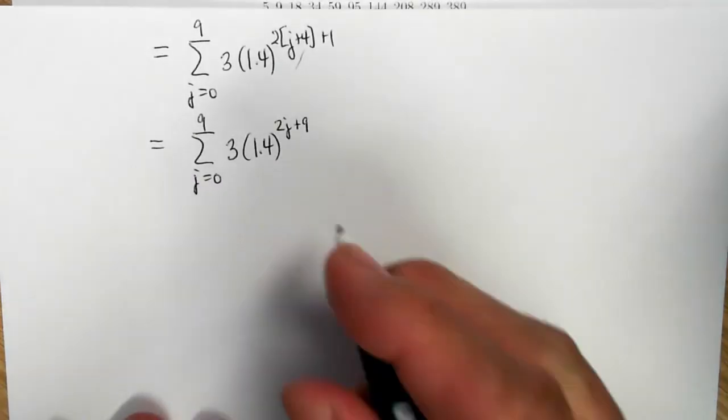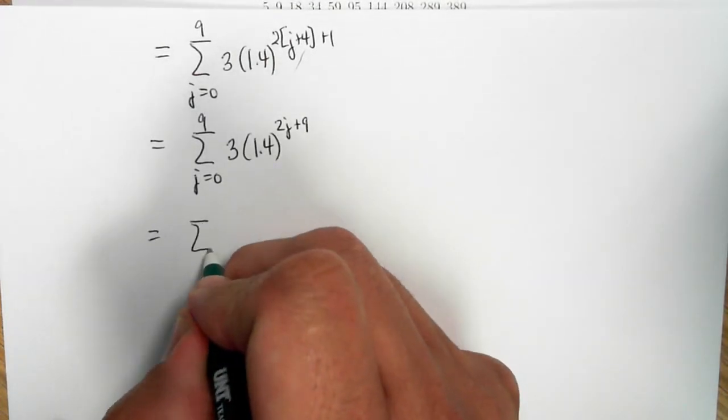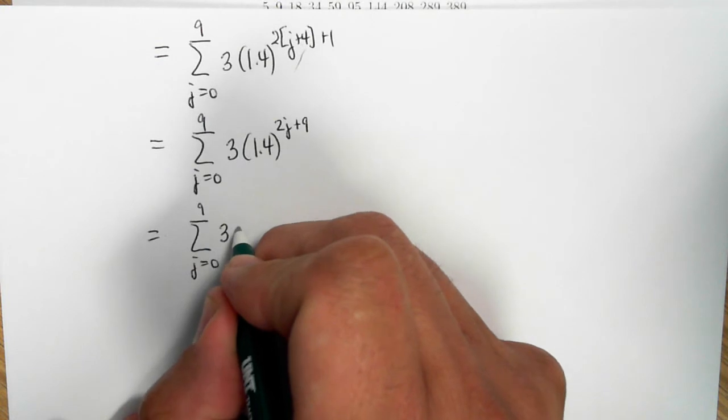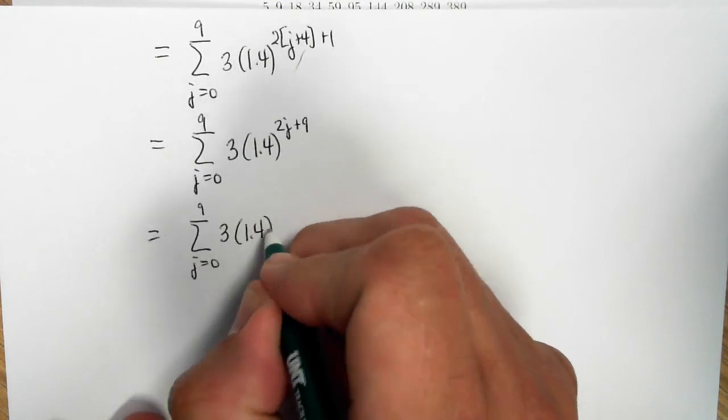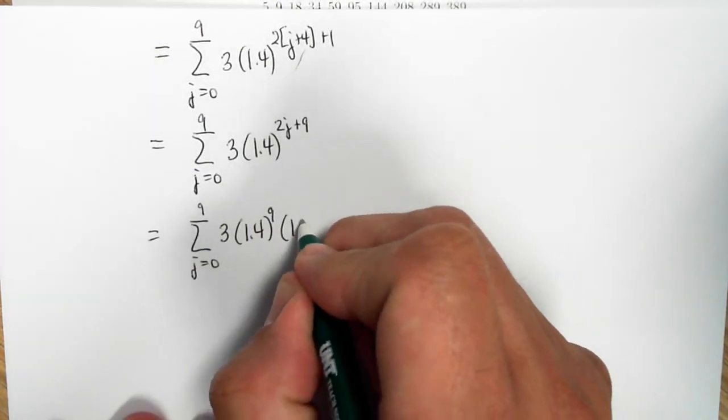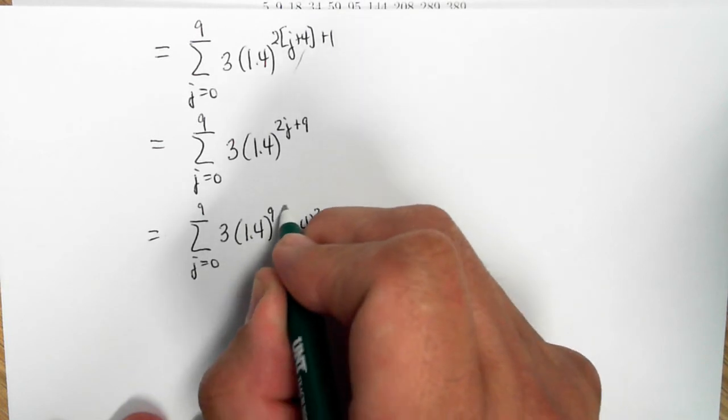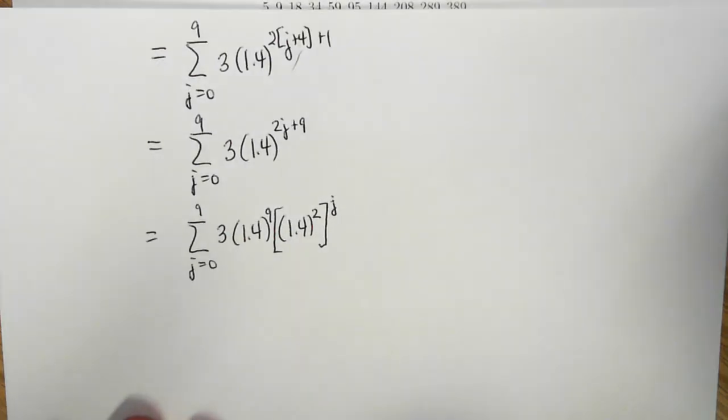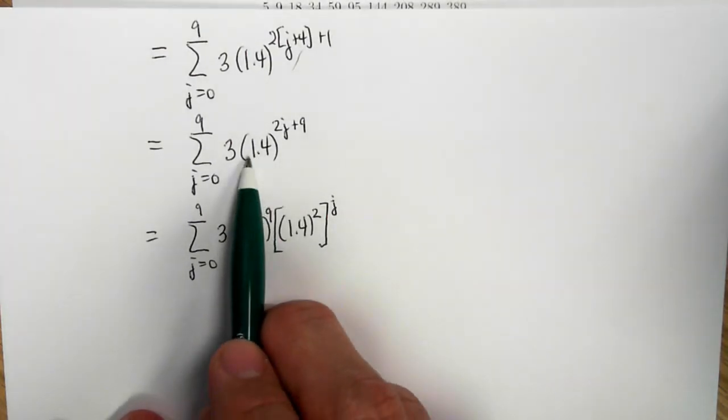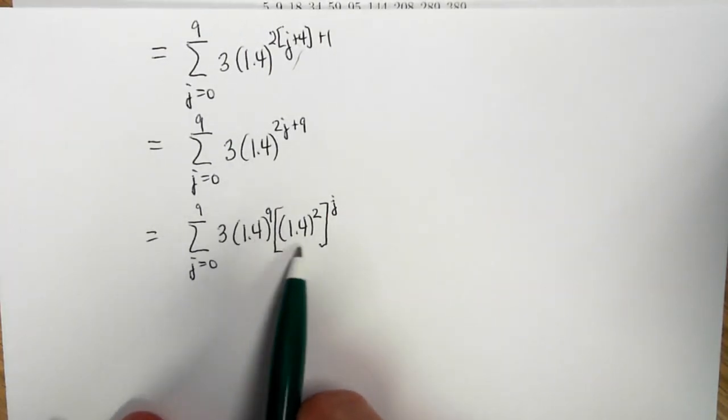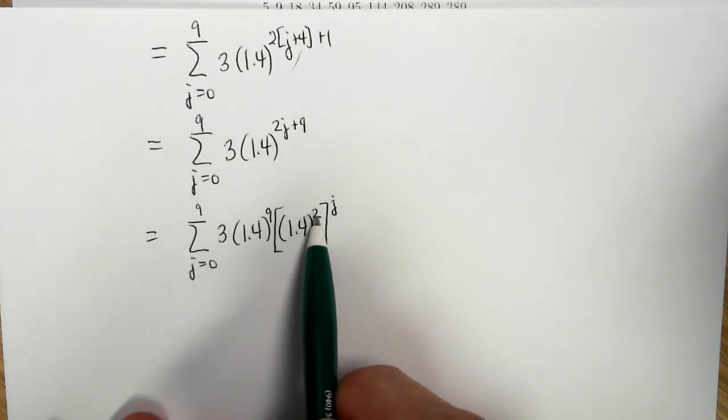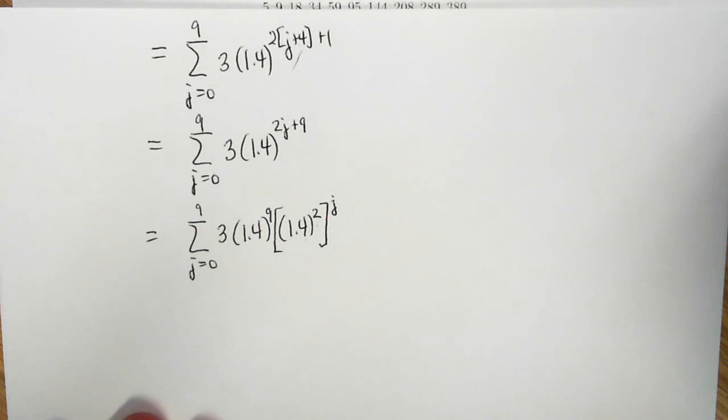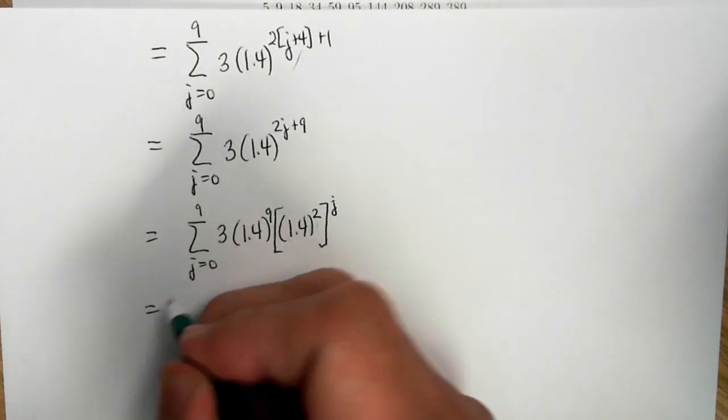Now let me rearrange this. This is equal to summation j equals 0 to 9, 3 times 1.4 to the 9 times 1.4 squared to the j power. Now, ordinarily, you wouldn't take this simpler thing and split it up into this more complicated thing, but clearly 2 times j plus 9 would give me the exponent that we see here.